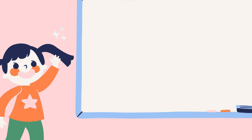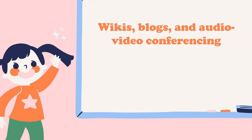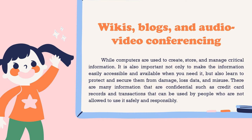Today, internet access is always readily available to individuals, companies, and organizations for gathering and sharing information. Wikis, blogs, and audio-video conferencing are some of the most common applications available via the internet. While computers are used to create, store, and manage critical information, it is also important not only to make the information easily accessible and available when you need it, but also to learn to protect and secure it from damage, lost data, and misuse. There are many types of information that are confidential, such as credit card records and transactions, that can be used by people who are not allowed to use it safely and responsibly.